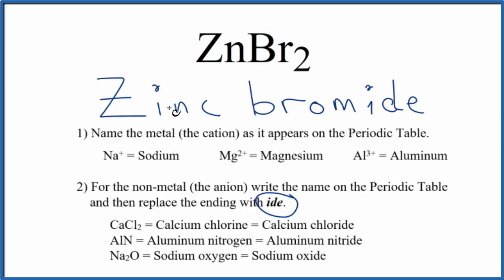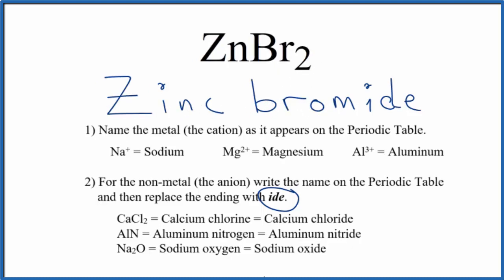But the official name, the IUPAC name, is zinc bromide. One final note. Zn is a transition metal. So you might be wondering why we didn't write zinc roman numeral 2 bromide.